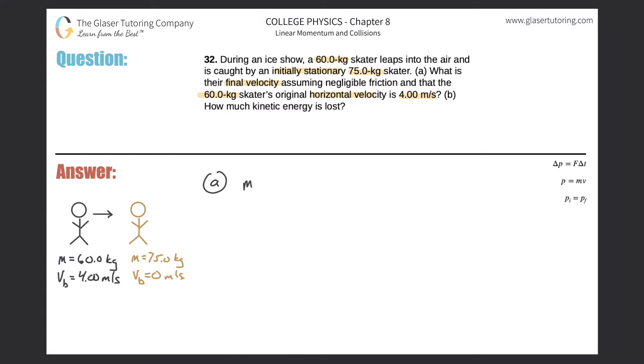So this is basically M1V1 before the collision plus M2V2 before the collision because the two objects, object one and object two, which I'll call here is object one and this one's object two, the two objects before the collision are separated, and then after the collision, they are joined.